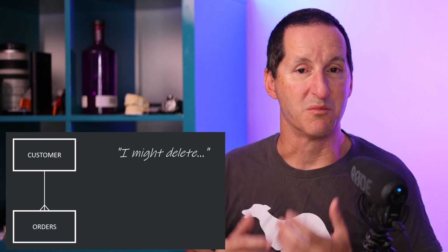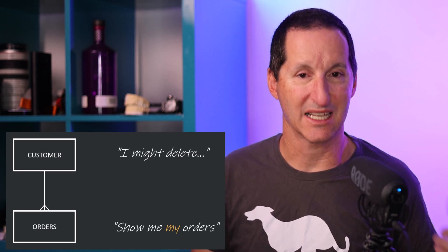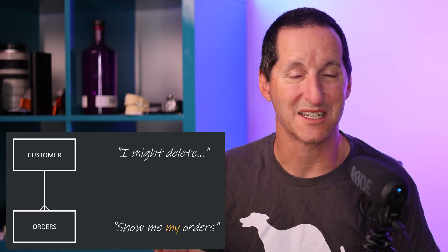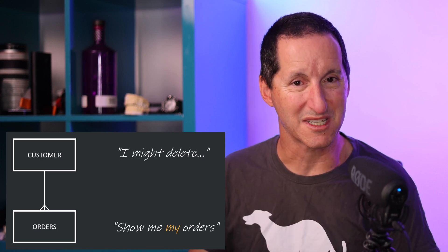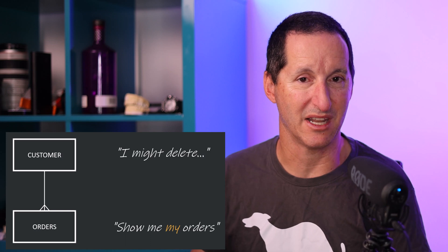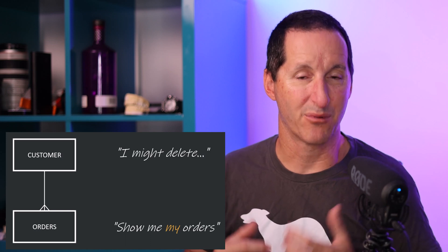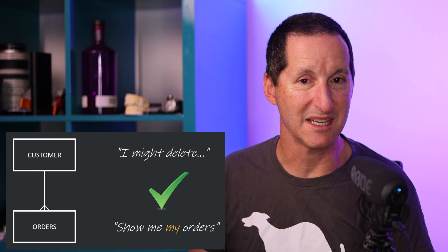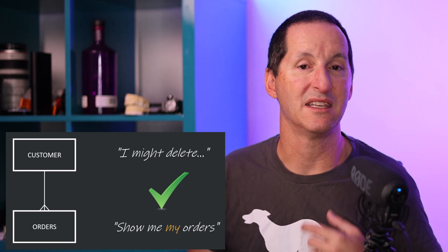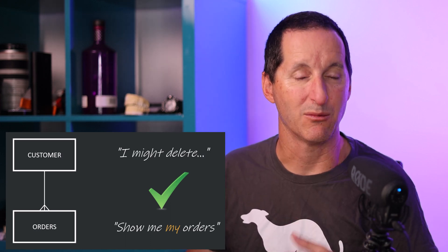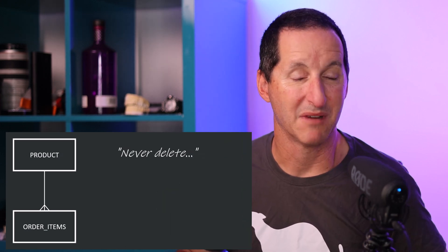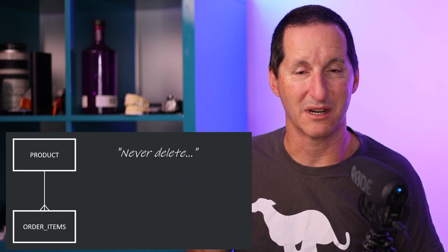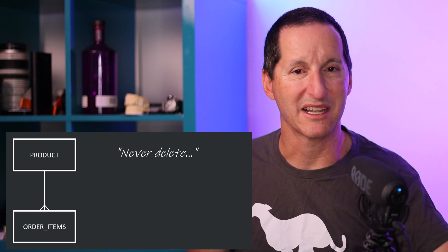More likely, someone is going to come along as a customer and say 'show me my orders.' They're going to do queries against the orders table for their given customer number. That probably means for simple index performance reasons you're going to want to keep that foreign key index on the orders table, which points back to the customers table.